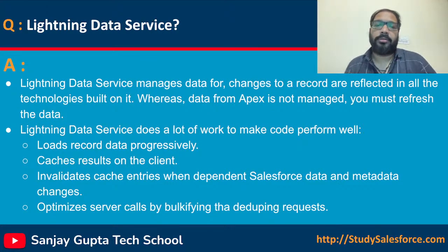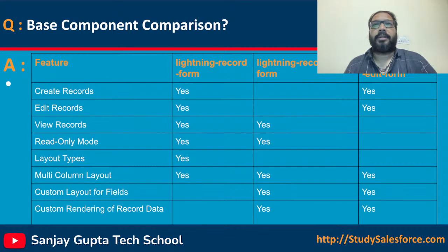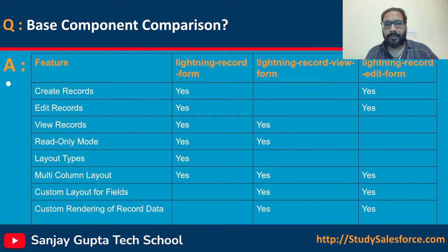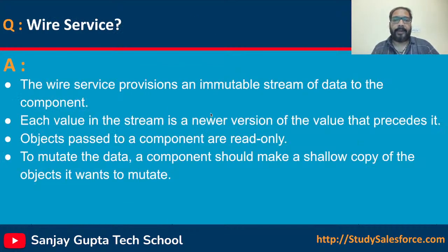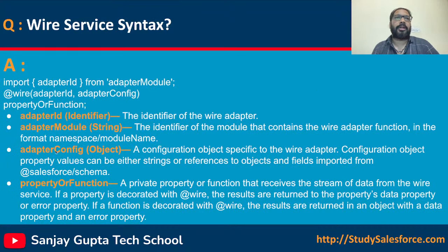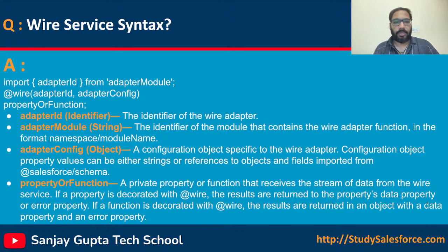There is a comparison table for lightning-record-form, lightning-record-view-form, and lightning-record-edit-form — all comparisons are available here and this is important. Then wire service — important again. You need to prepare it as well. Then the syntax: you need to understand what each parameter means. In this slide you will get to know each and everything. I think it is also important, and with this summary you will be able to understand.